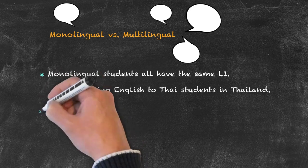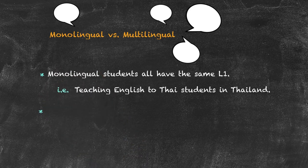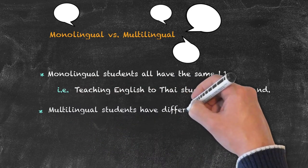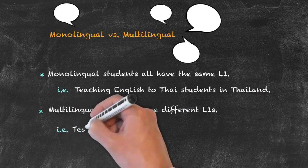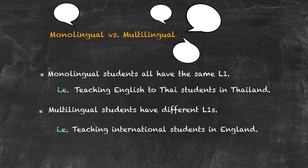The difference with a multilingual class is that the students will have a range of first languages, so they have different L1s. An example there may be the teaching of English to a group of students in an English-speaking country, for example in England. Whether your class is monolingual or multilingual, it brings with it a range of advantages and disadvantages.